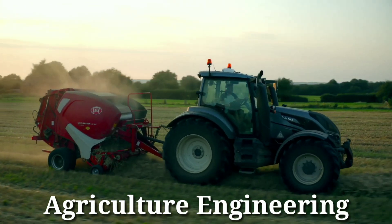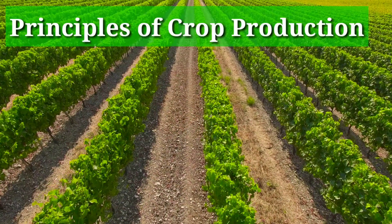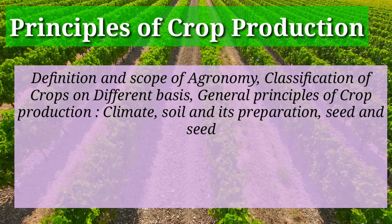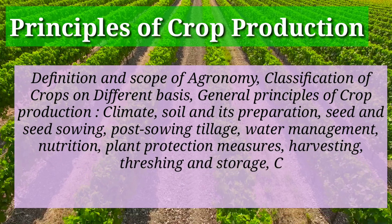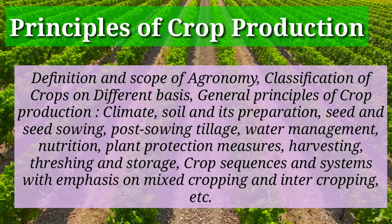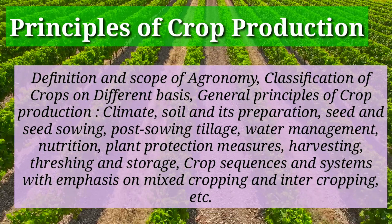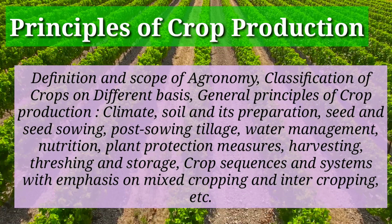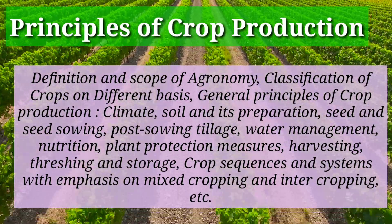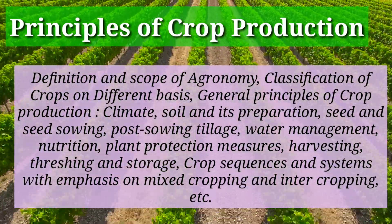Some of the common subjects included in the BSc agriculture course curriculum are: principles of crop production, definition and scope of agronomy, classification of crops on different bases, general principles of crop production, climate, soil and its preparation, seed and seed sowing, post-sowing tillage, water management, nutrition, plant protection measures, harvesting, threshing and storage, and crop sequences and systems with emphasis on mixed cropping and inter-cropping.